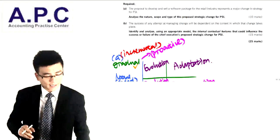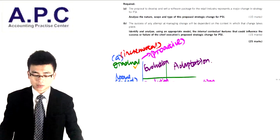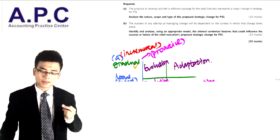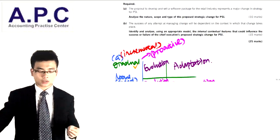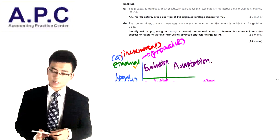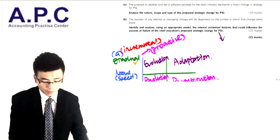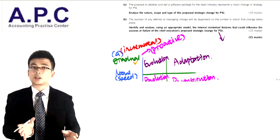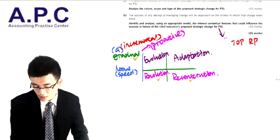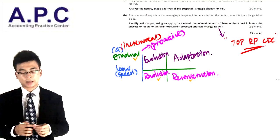For Part B, the success of any attempt at managing change will be dependent on the context in which that change takes place. So identify and analyse, using the appropriate model, the internal contextual features that could influence the success or failure of the CEO's proposed change. The model is the Holt, Haley, and Balegans model. It has eight particular elements, and we're going to use a mnemonic called TOPRPCDC.